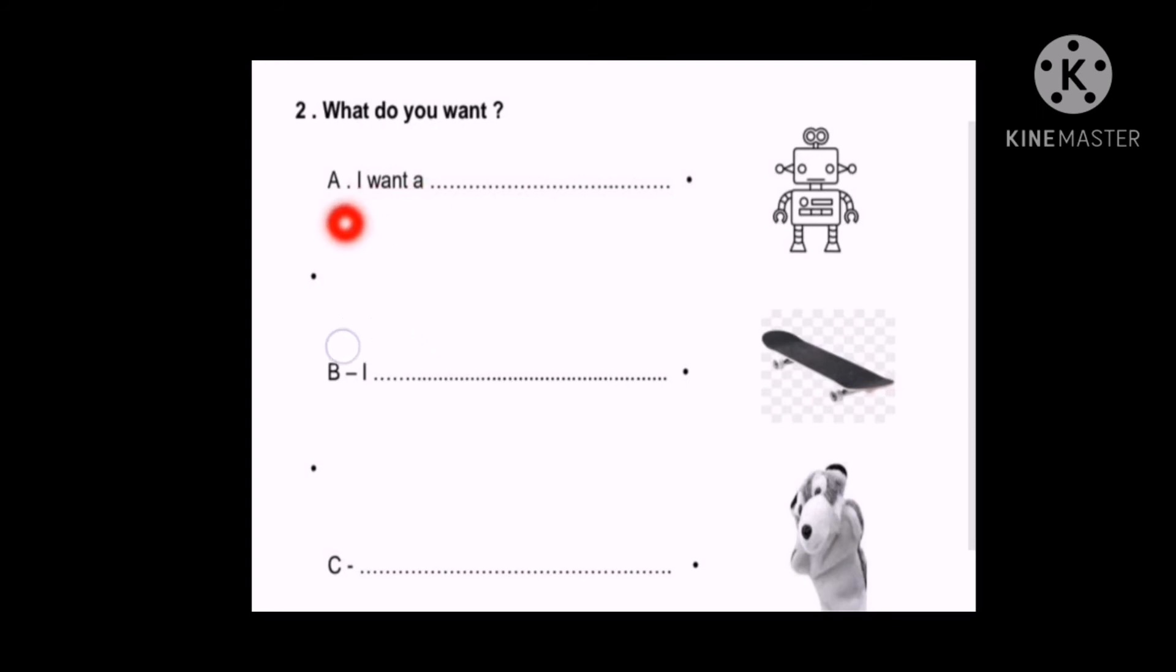So A: I want a. This is the answer. My answer should start with I want a. So what do you want? I want a. Look at the picture. I want a ball. Excellent. B: Look at the picture. What do you want? I - come on, complete with me. How should the answer be? I want a. Perfect. I want a skateboard. I want a skateboard.